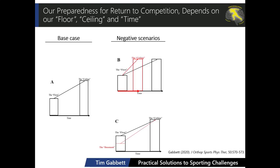Let's look at a couple of scenarios. The first is where the floor and ceiling are identical, but the amount of time we have is reduced — for example, if a coach wants an injured athlete back quickly, or if we have a very short pre-season. In this case, the slope of the line between the floor and the ceiling is much steeper, which increases the athlete's risk of injury and risk of underperformance when they reach the ceiling.